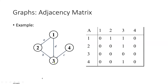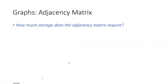So this graph is represented as an adjacency matrix of size 4 by 4, because we have 4 nodes or 4 vertices. Now, how much storage does the adjacency matrix require? Based on the fact that a matrix consists of rows and columns — it's two-dimensional — the storage required is V squared, where V is the number of vertices. Since we have 4 vertices here, we have a 4 by 4 matrix.